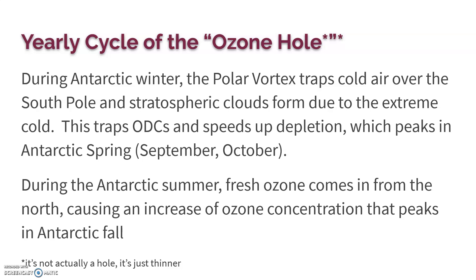During the Antarctic winter, there's a polar vortex that traps cold air over the South Pole. It gets so cold that clouds form up into the stratosphere, which is not a normal phenomenon since the stratosphere is 20 to 30 kilometers above ground. This cold air traps ozone-depleting compounds, which speeds up the depletion — they have nothing to do but damage all those ozone molecules. We see the ozone hole peak in Antarctic spring, around September and October, because that's when it starts to warm up. The polar vortex breaks down, the stratospheric clouds dissipate, and more air circulates in from the north bringing more ozone. It gets better and better until about Antarctic fall, then it repeats the process.